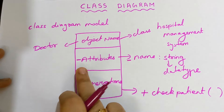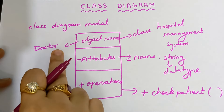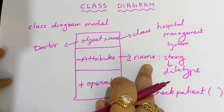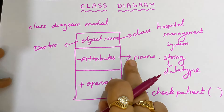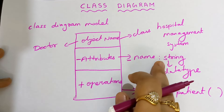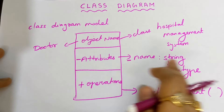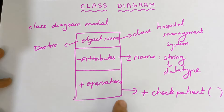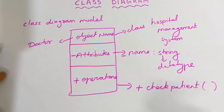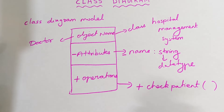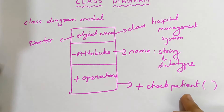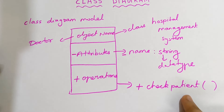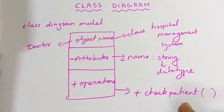For attributes, put a minus sign for whatever object you have chosen. If you have chosen doctor, write the attributes of doctor with a minus sign before it — name of the doctor, colon, the data type. Name means it is a string because it is full of alphabets. Next, in the third box put plus for operations — what operations the doctor can access. Checking patient details: the doctor will have access to do that in order to prescribe proper medicine. In this way, you are supposed to draw a class diagram model.